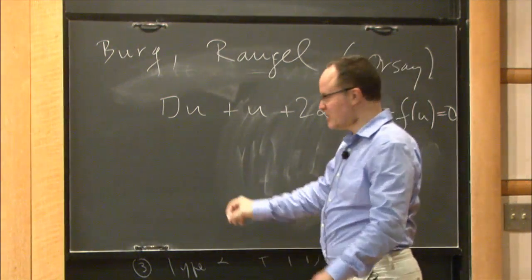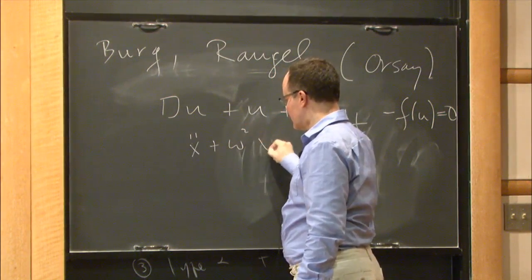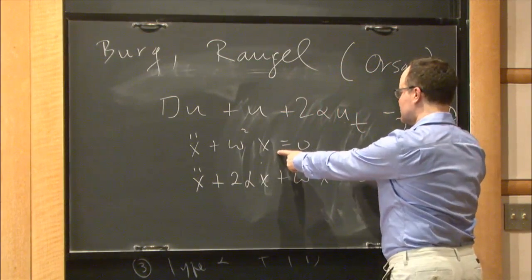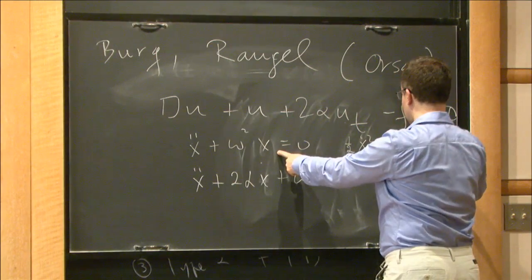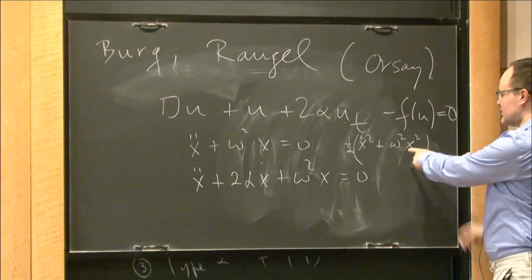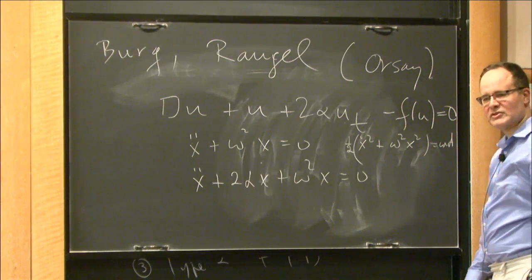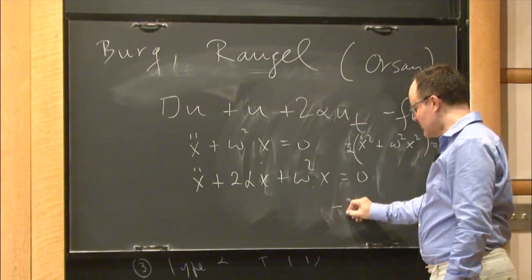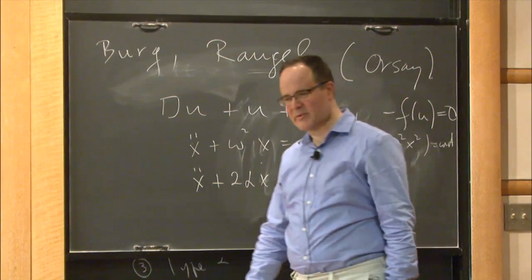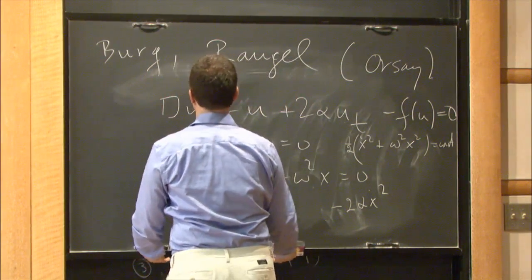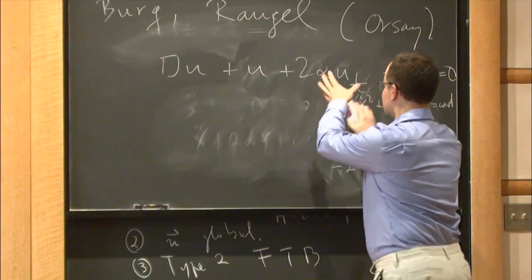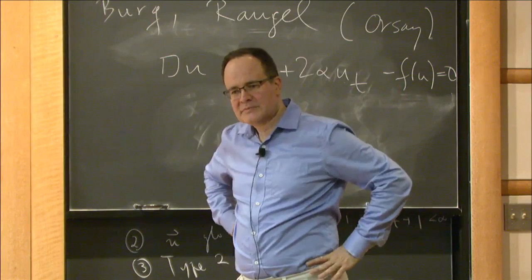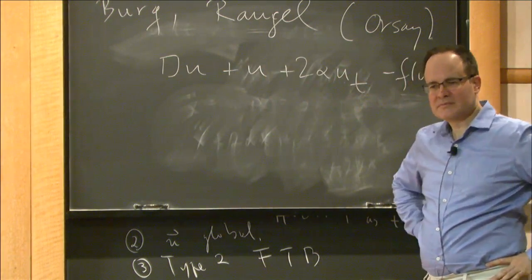Think of going from the harmonic oscillator to the damped harmonic oscillator: ẍ + ω²x = 0 has conserved energy E = (1/2)ẋ² + (1/2)ω²x², but for the damped version ẍ + 2αẋ + ω²x = 0, the energy is not constant — its derivative is -2α ẋ², so energy decreases or is constant. There is a similar behavior for the PDE.